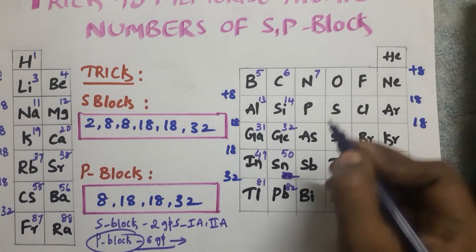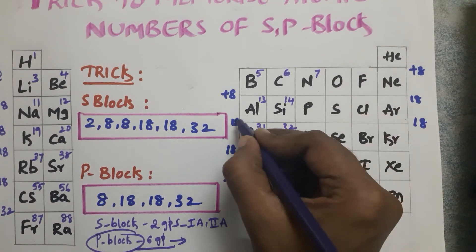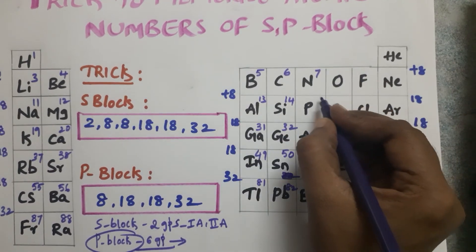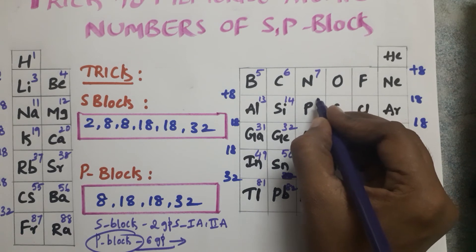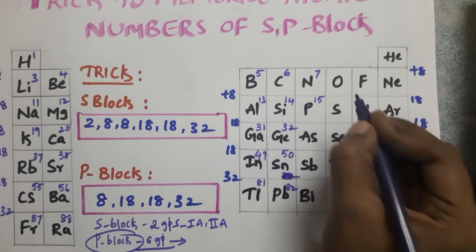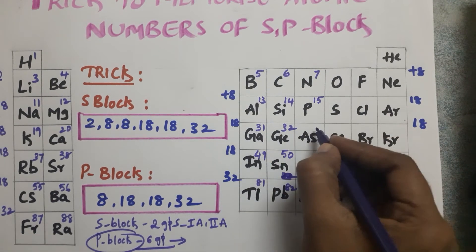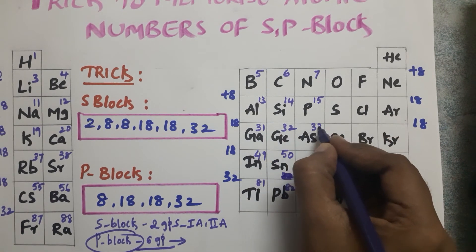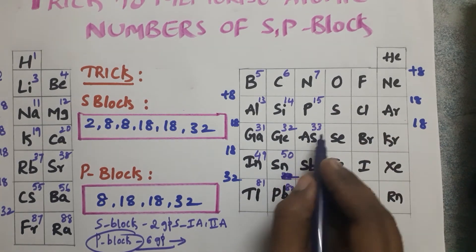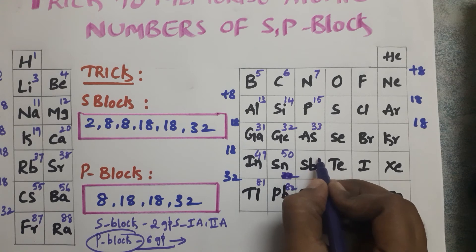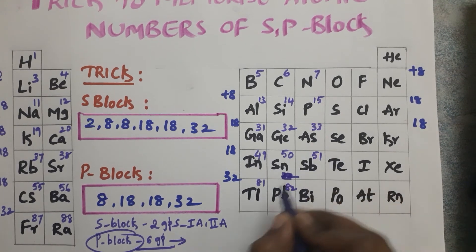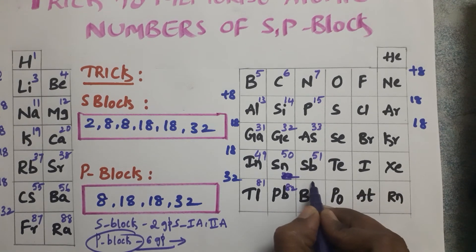Nitrogen has atomic number 7. Then 7 plus 8 equals 15 (phosphorus), 15 plus 18 equals 33 (arsenic), 33 plus 18 equals 51 (antimony), and 51 plus 32 equals 83 (bismuth).